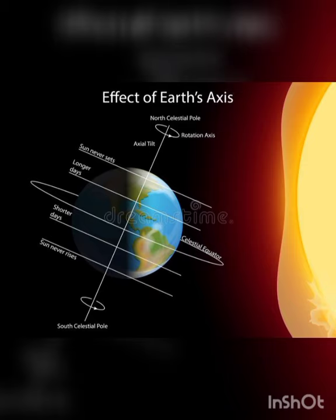We have seasons because of the tilt of the earth's axis — that is the first point. Revolution causes seasons; rotation causes day and night. We have seasons because of the tilt of the earth's axis and the orbit of the earth around the sun. As the earth goes around the sun, one season follows another in a continuous cycle.